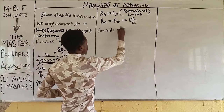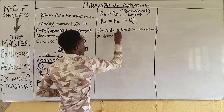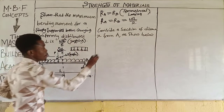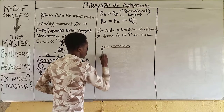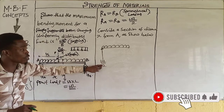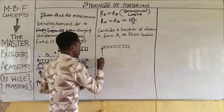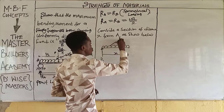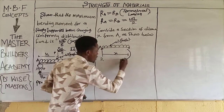Consider a section at distance X from A. We redraw the free body diagram showing: the reaction at A, which is WL/2 (or R_A), the distance X from A, and the UDL of W kilonewton per meter acting over the length X. We are taking the bending moment M_X at this cut section.